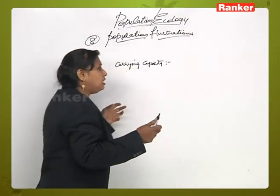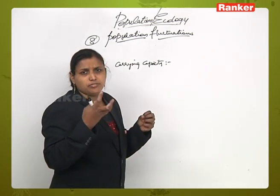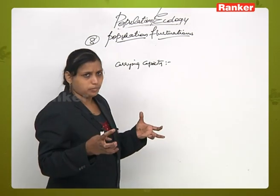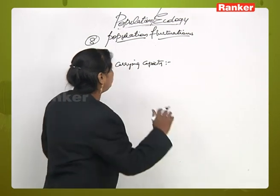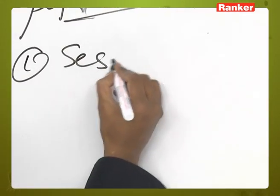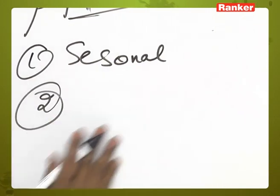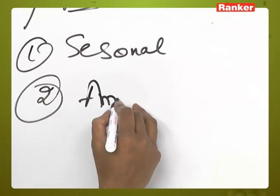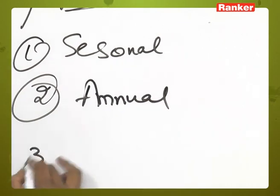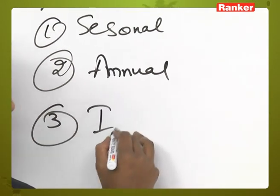What will happen? You start from slow, shoot up, and immediately you stop — so you will see either more of the population or a downfall of the population, and the population density will definitely show a sort of fluctuation. These changes occur due to changes in the physical environment. These fluctuations are of three types: first is seasonal fluctuations, second is annual fluctuations, and third is eruptive fluctuations.